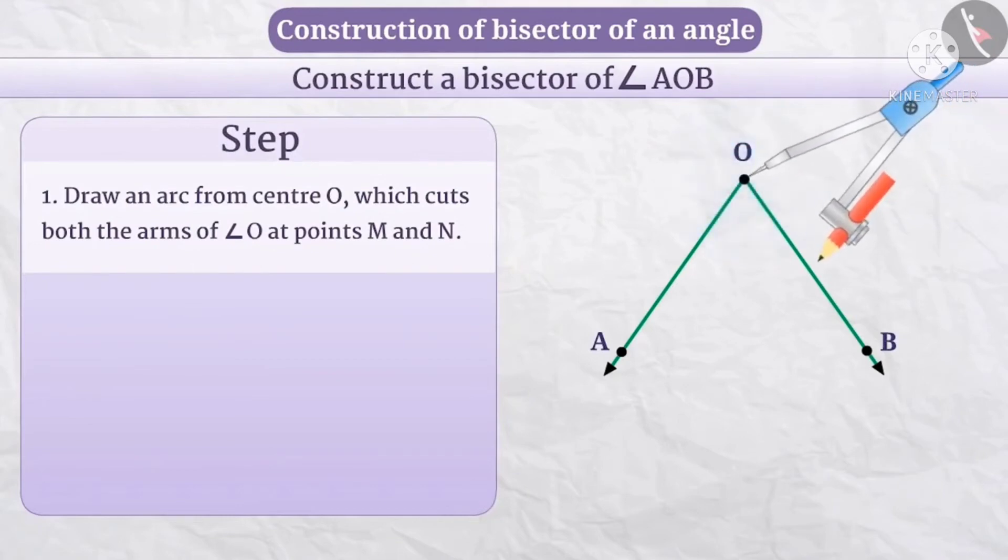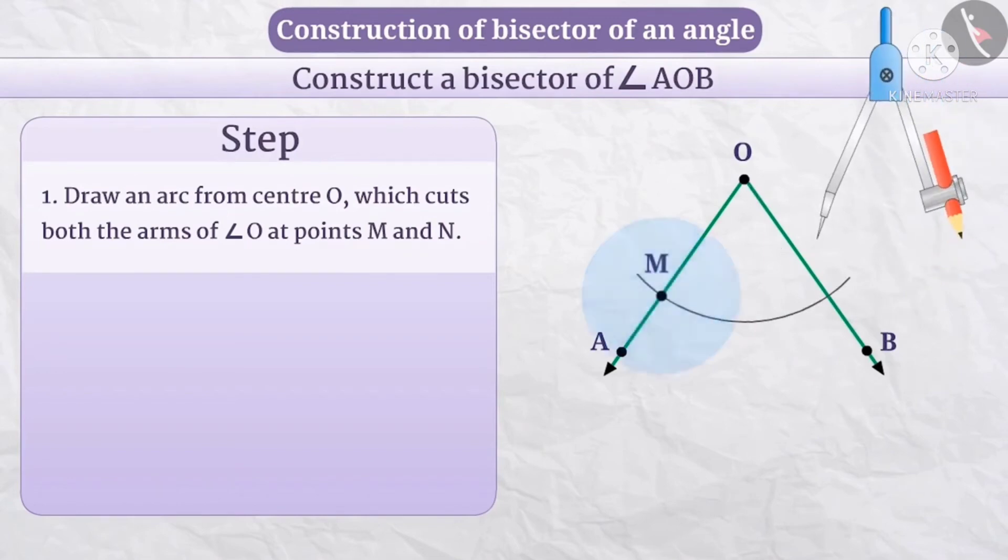...is given, where O is the vertex. We take the compass with suitable distance and draw an arc from point O. These arcs on both sides give us two intersecting points, point M and point N.